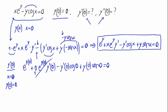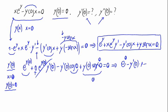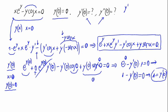We can cross out the terms multiplied by 0. So we have e raised to y(0), and since y(0) is equal to 0, this is e raised to 0, minus the derivative of y(0) times the cosine of 0, which is 1. So we have 1 minus the derivative of y(0) equals 0, therefore the derivative of y(0) is 1. We have just calculated the derivative of y at 0, which equals 1.